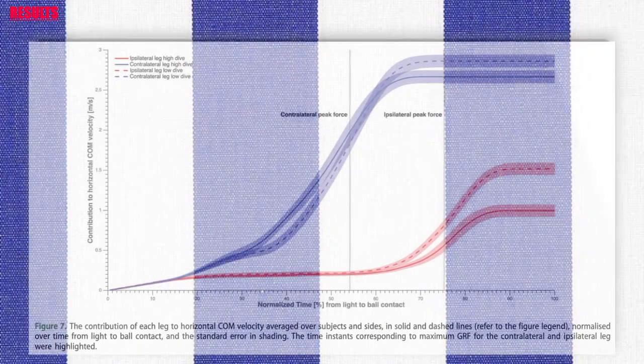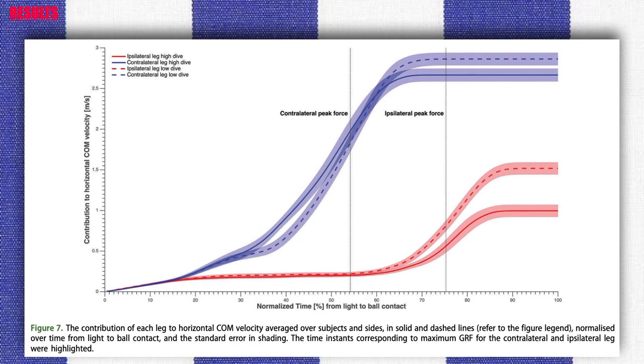The maximum contribution to the center of mass horizontal as well as the vertical velocity towards the ball was larger for the contralateral leg than for the ipsilateral leg during all diving save conditions.